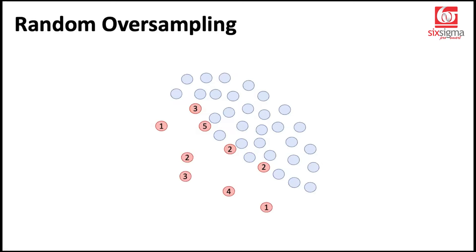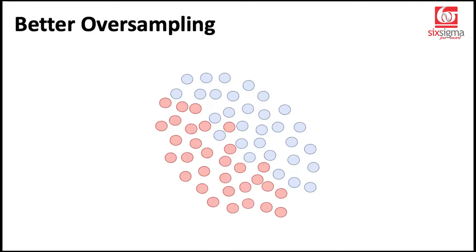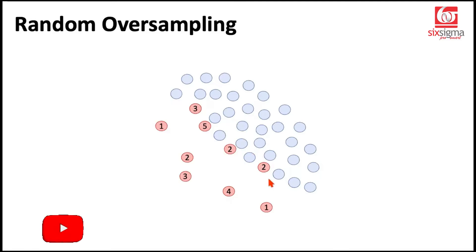As you must realize, the drawback here could be that we are not adding any new knowledge. We are just repeating the existing observations multiple times. In fact, a better oversampling would have been something like this. You at least have a variety of observations to learn from, rather than just simply repeating the existing observations to say that we want to give equal emphasis to both the classes.